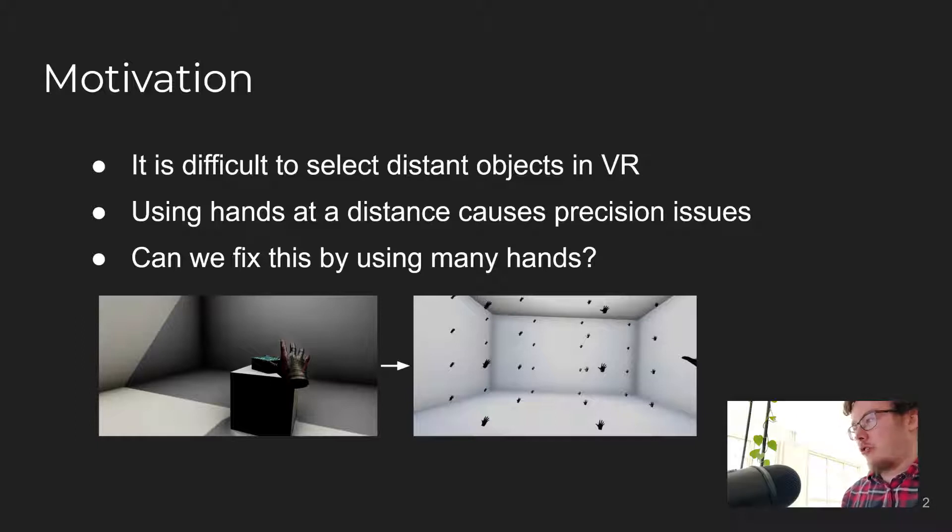We thought that a way of addressing this issue could be to add more hands to the equation, so that this gain can be minimal even at far distances. A similar concept was shown to work with large 2D displays in Ninja Cursors, where a single mouse was mapped to many cursors for improved target selection.